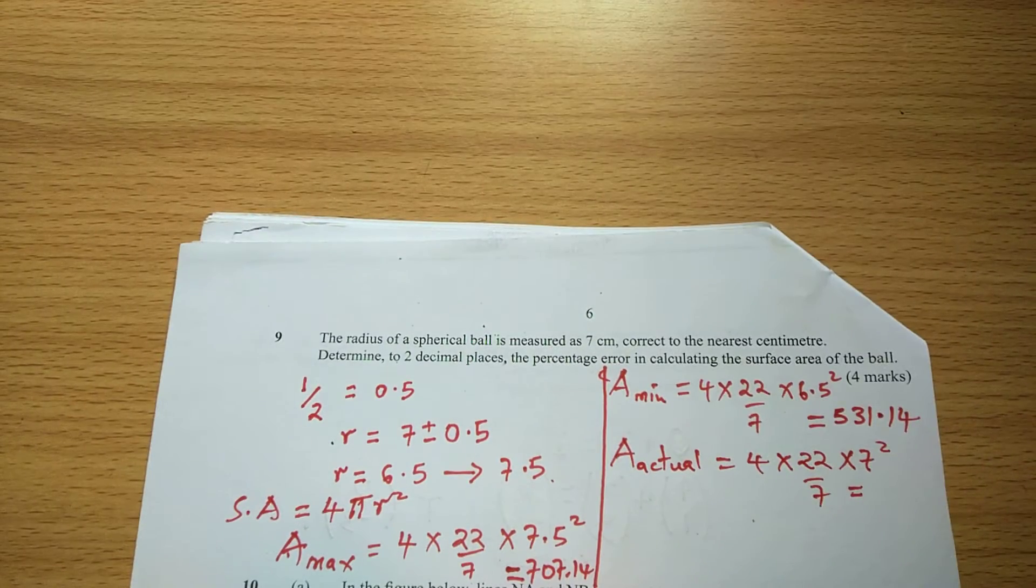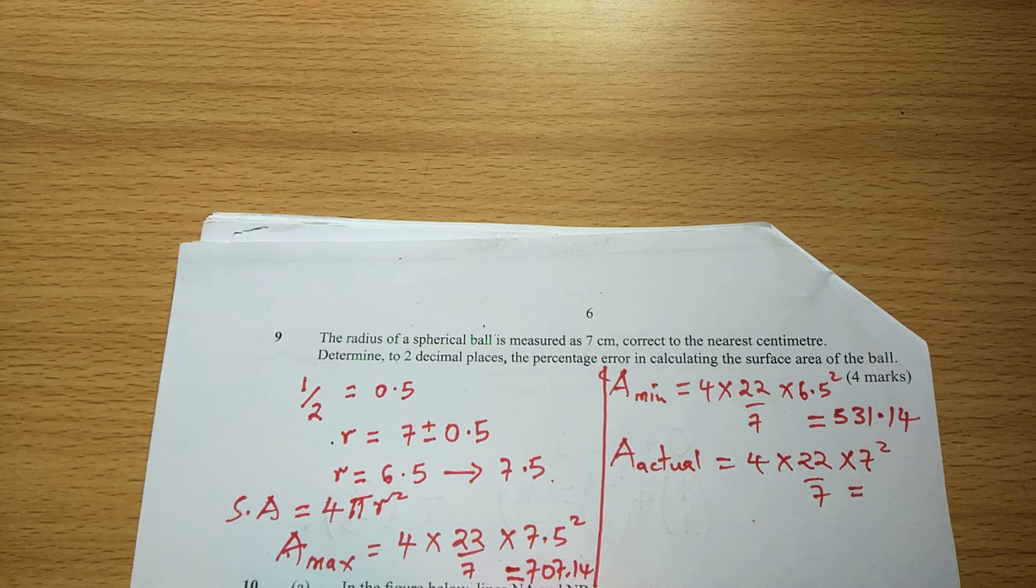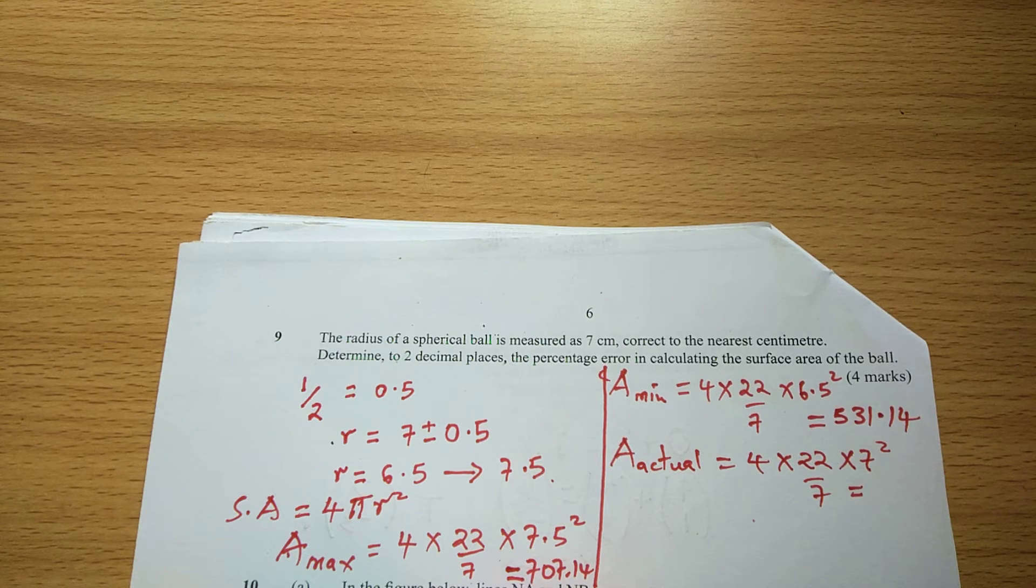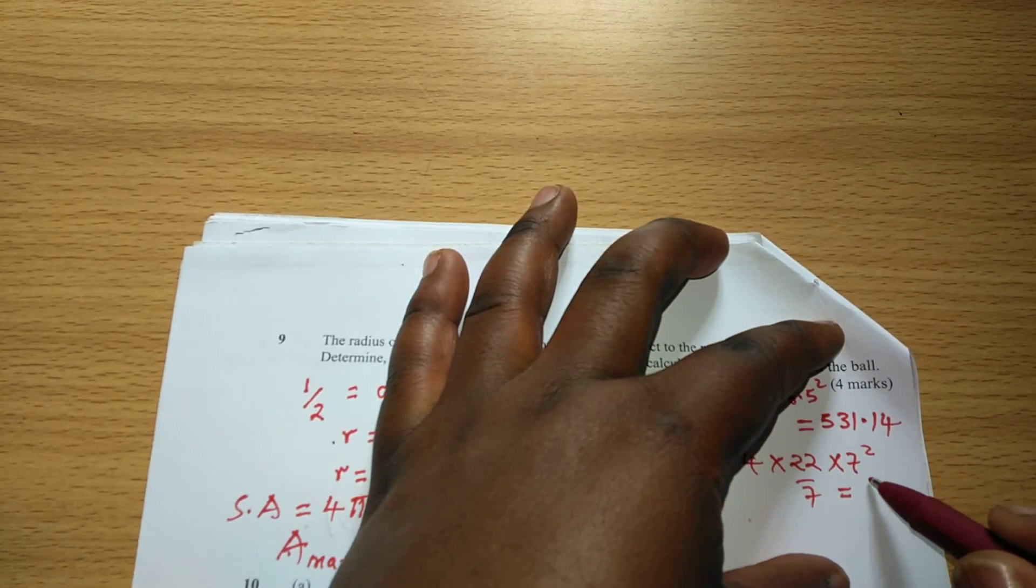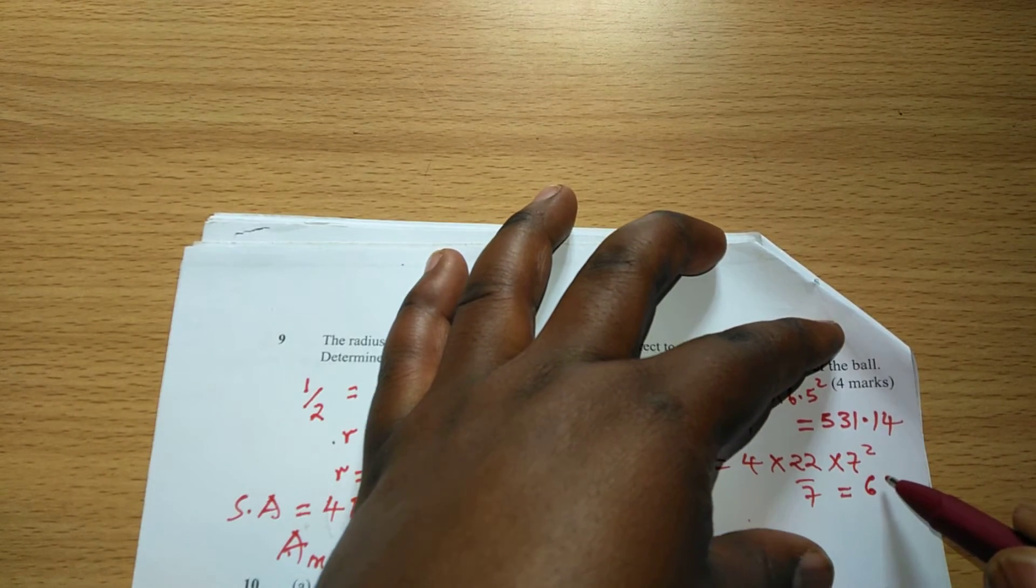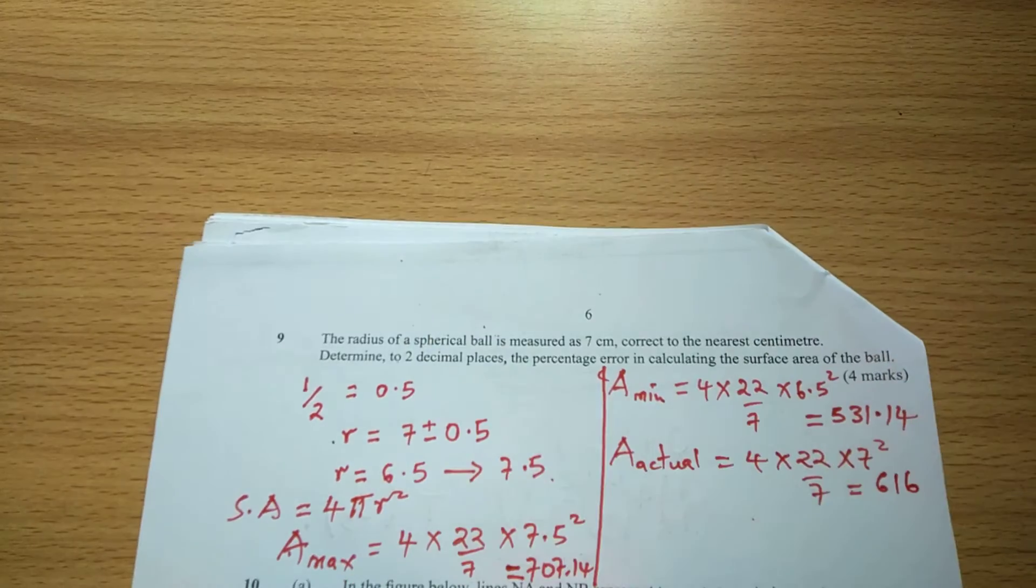So when we use this one we'll have 22 times 4 multiplied by 7 because one 7 cancels with the 7 in π. This gives us 616.